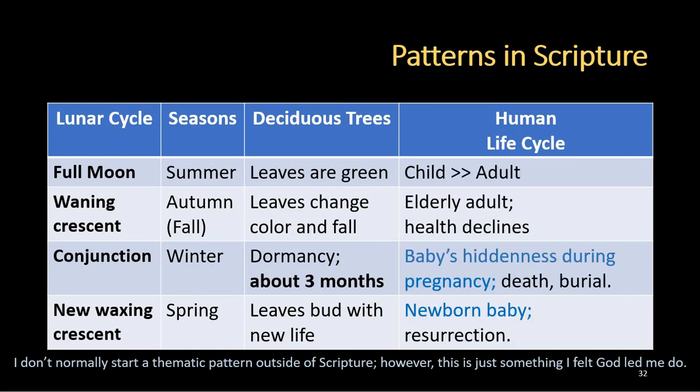We also see this cycle taking place in the human life cycle. We can compare the period from childhood through the adult years to the full moon — that full time of life. As an adult becomes elderly, their health declines and things are waning, comparable to the waning crescent. The period of conjunction can correspond to a baby's hiddenness during pregnancy, but it can also correspond to death and burial. And a newborn baby, as well as resurrection, can also correspond to the new waxing crescent.